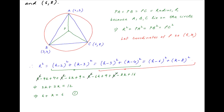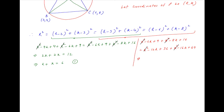Now using the second equality, we get H² − 6H + 9 + K² − 8K + 16 = H² − 12H + 36 + K² − 16K + 64. The H² and K² terms cancel across the left-hand side and the right-hand side, and this equation simplifies to 6H + 8K = 75. Let's call this result 2.